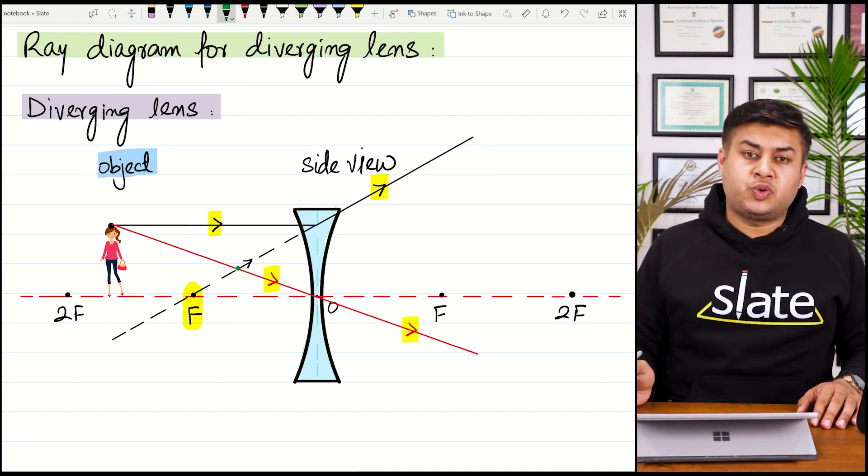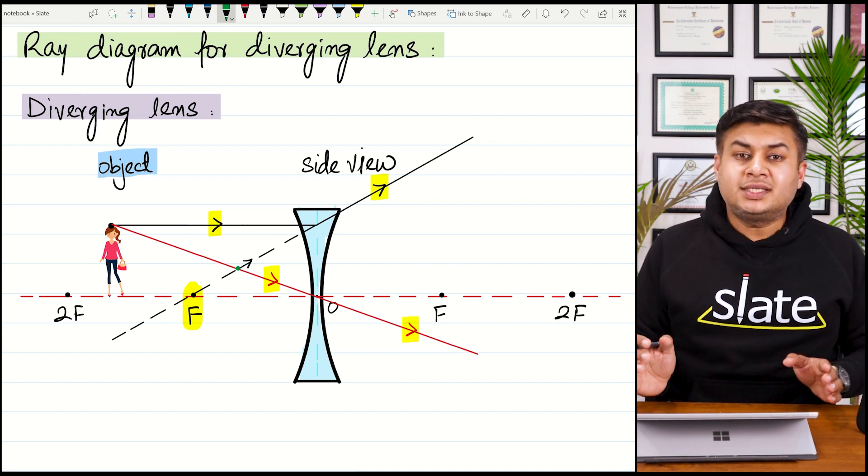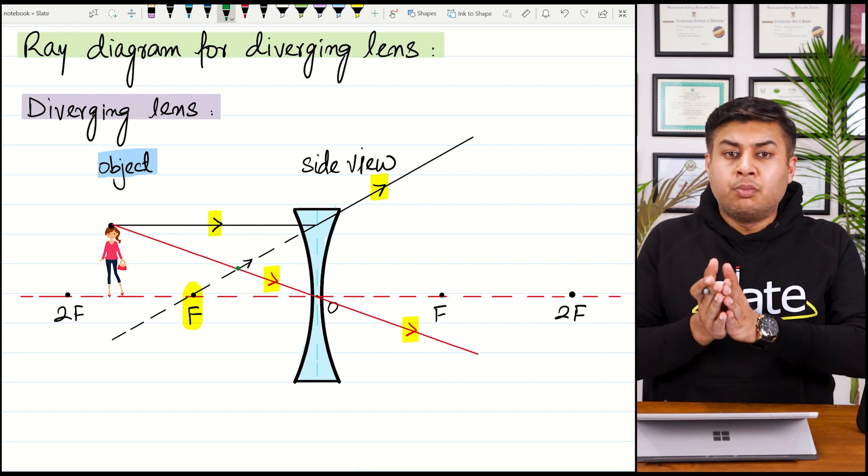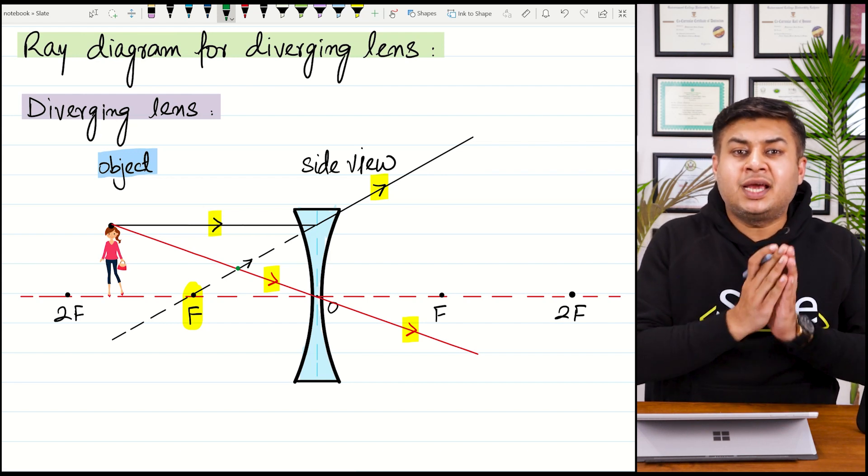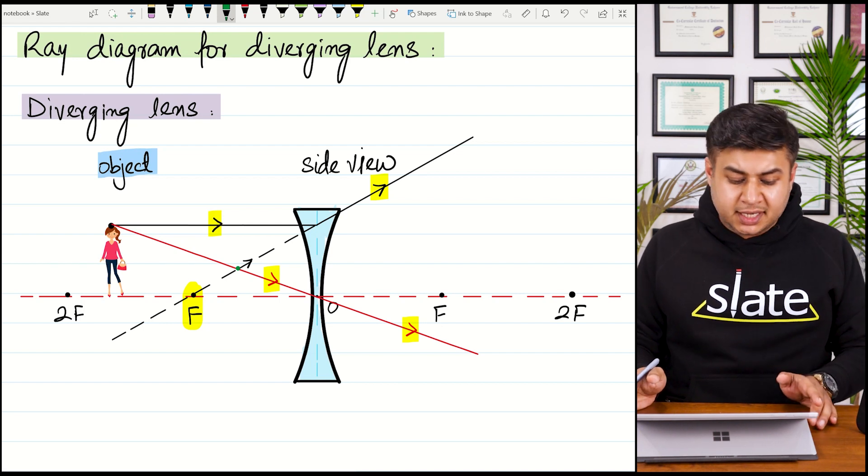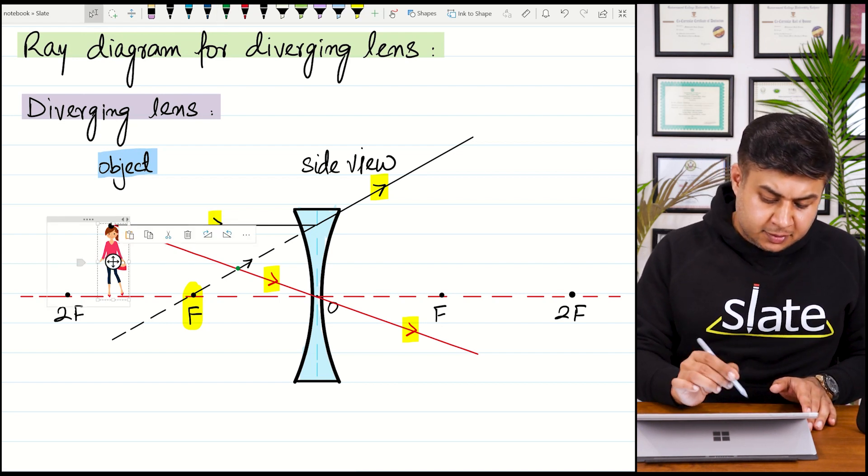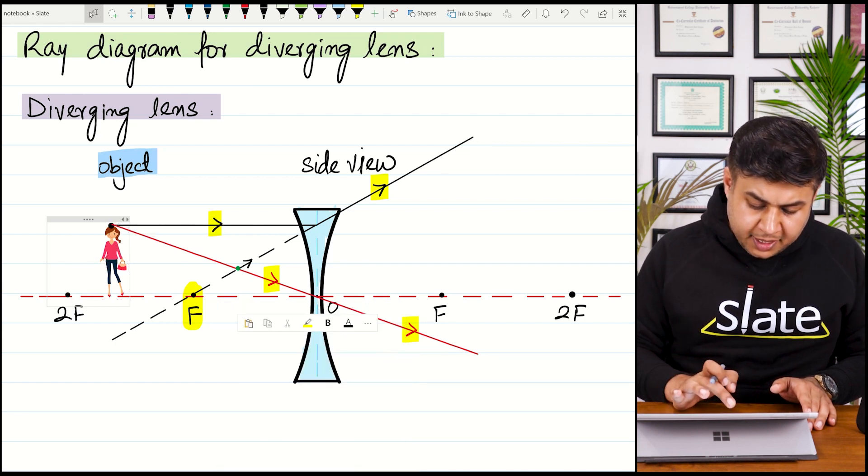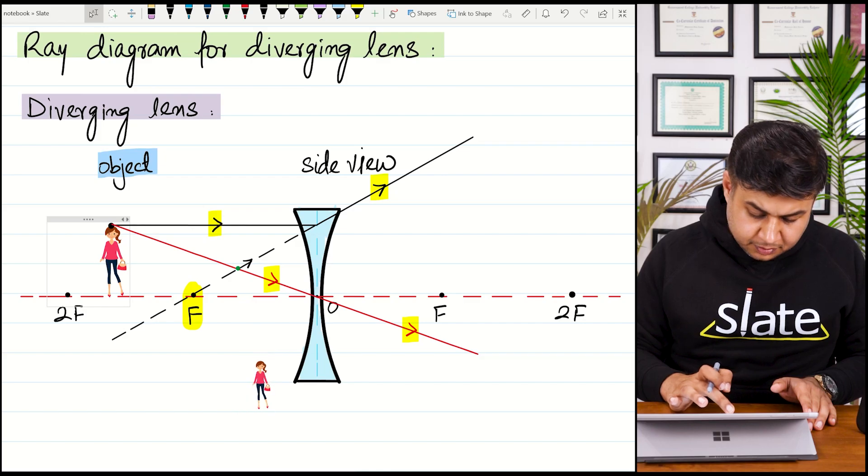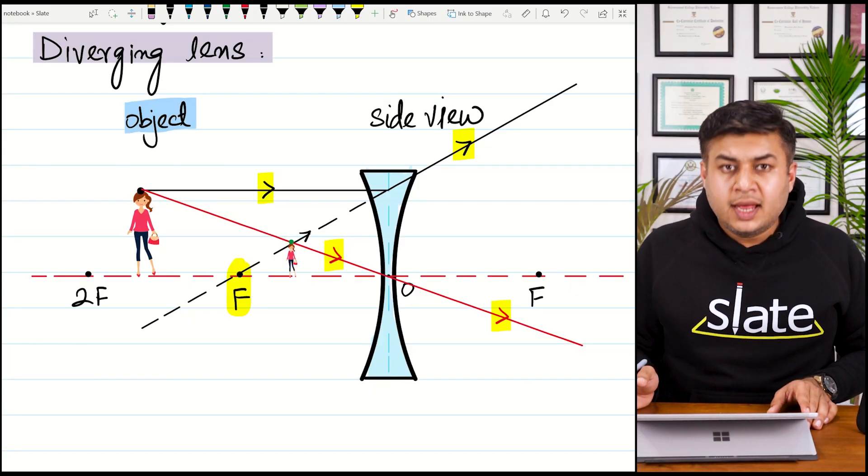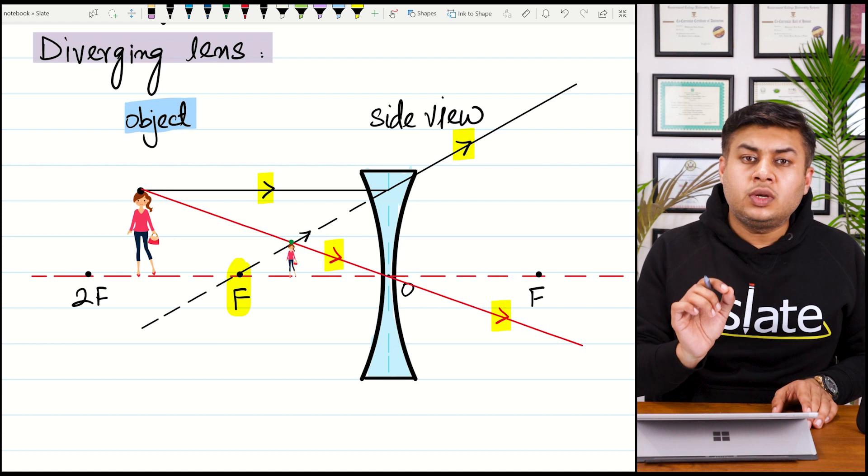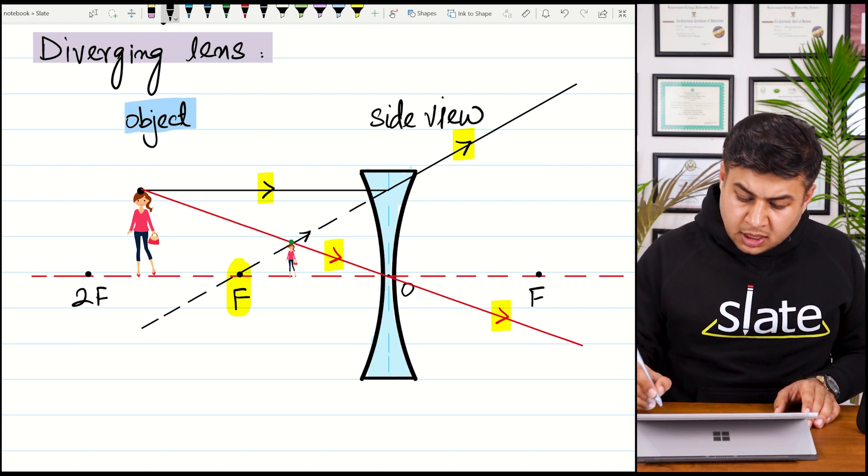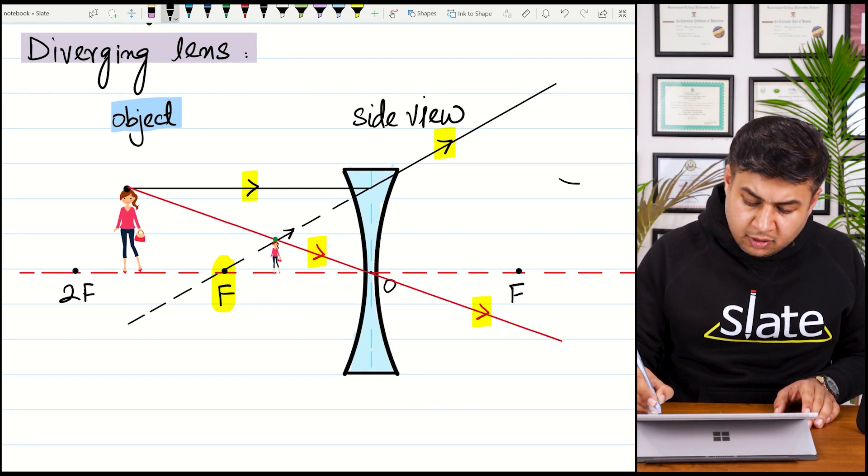This is a case in which object and image both are present at the same side of the lens, which is the left side. Let me place an image here. You can see the image is formed at a point where the two rays of light are intersecting. A person who is viewing this whole scenario from this side of lens